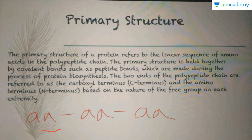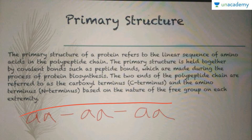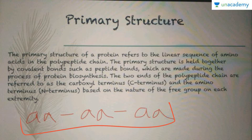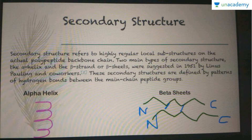If we have one amino acid bound to another amino acid of the same or a different type, and yet another amino acid, we get multiple bonds — these are peptide bonds, and because there are multiple we call them polypeptide bonds, forming a polypeptide chain — a linear structure. The two ends of the polypeptide chain are referred to as the carboxyl terminus (C terminus) and the amino terminus (N terminus) where NH2 is present.